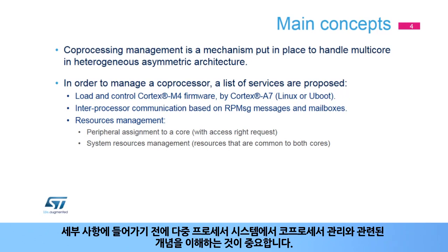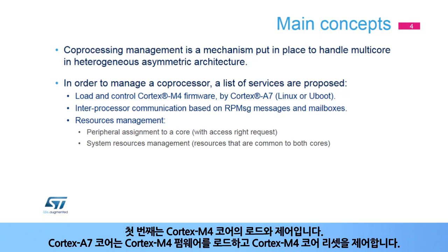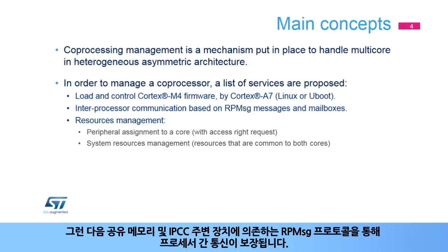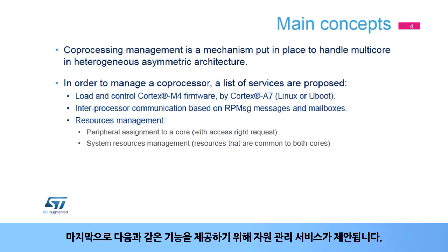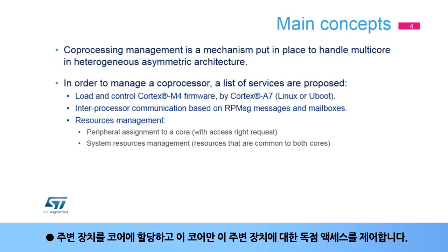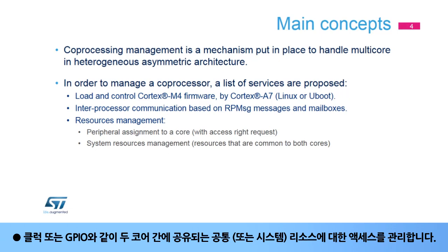Before entering into details, it is important to understand the concepts involved in the management of a coprocessor in a multiprocessor system. The first one is the load and control of the Cortex-M4 core. The Cortex-A7 core is in charge of loading the Cortex-M4 firmware and controlling the Cortex-M4 core reset. Then, the interprocessor communication is ensured by the RPMSG protocol that relies on shared memory and the IPCC peripheral. Finally, a resource management service is proposed to provide facilities to assign a peripheral to a core and control exclusive access to this peripheral by this core only, and to manage access to the common or system resources shared between the two cores, for instance clocks or GPIOs.